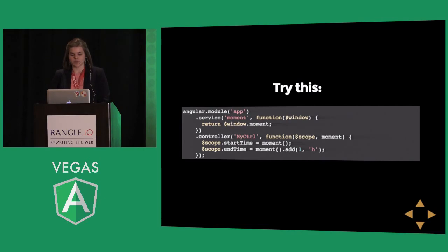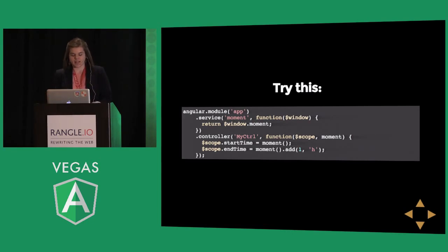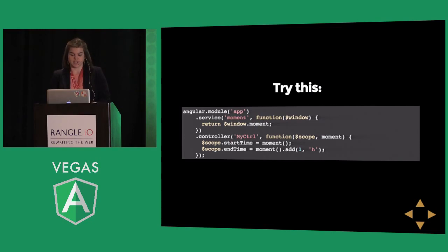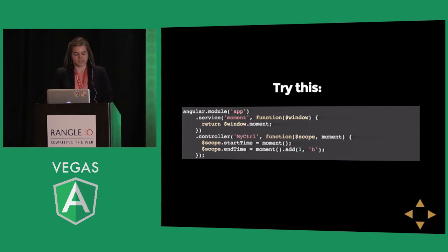Instead, we can try something like this where we wrap moment in a service. We can inject the $window service and grab the global moment object, and then inject that into our controller. The controller code stays the same — I'm still setting the start time and end time in the same way. I'm just injecting moment now and I know that's the single moment object I have as a service. And this is now testable, because before there's no real way to mock out moment in a unit test. But now that we're injecting it properly, we can mock it out when we instantiate the controller in our tests.